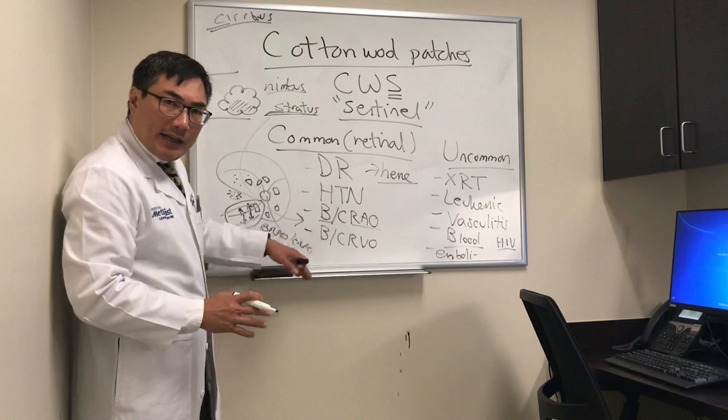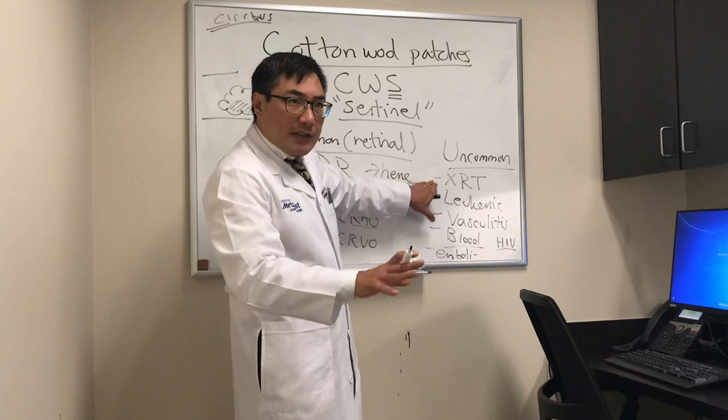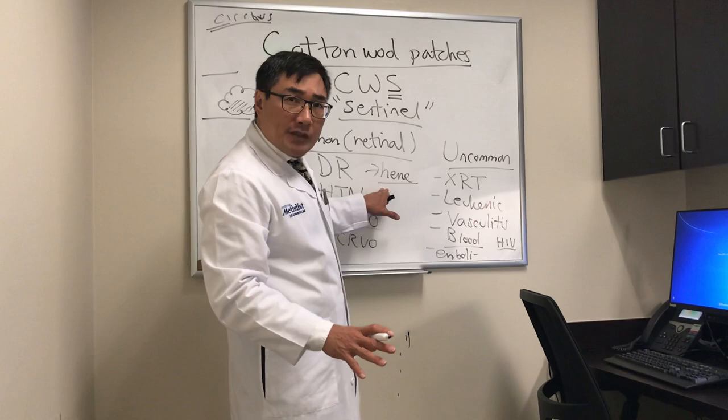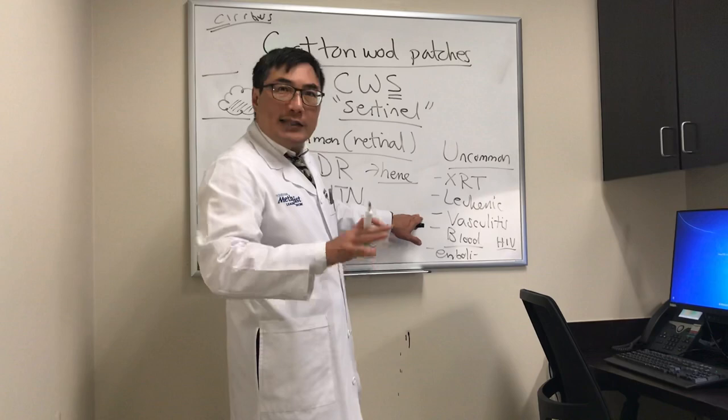In diabetes and hypertension, the affected vessels are much smaller, so cotton wool patches occur in between the vein and artery, with dot-and-blot hemorrhages rather than superficial flame hemorrhages. Leakage can produce macular exudate. Radiation therapy looks like diabetic retinopathy but there's a history of radiation to the head or neck. Leukemia will have hemorrhages, sometimes with a white center — a Roth spot.